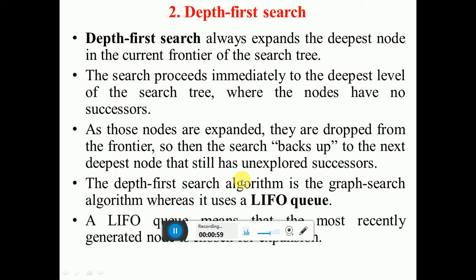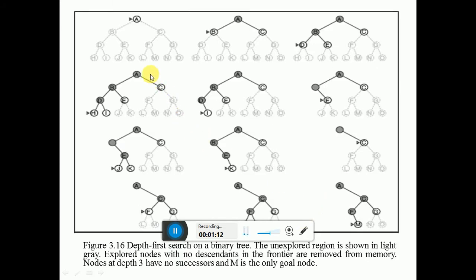This depth-first search works on a last-in-first-out queue. The LIFO queue means that the most recently generated nodes are expanded. This is the depth-first search strategy.